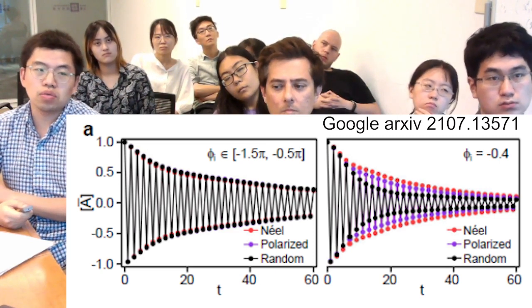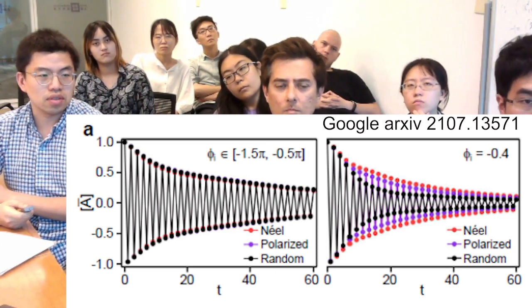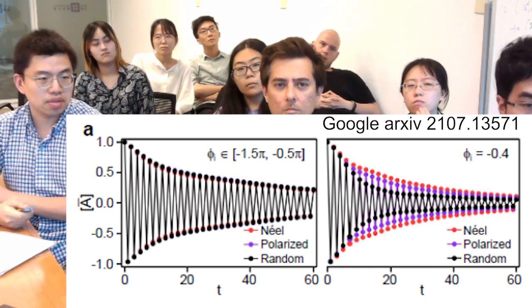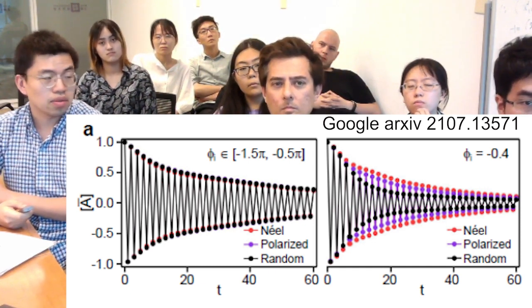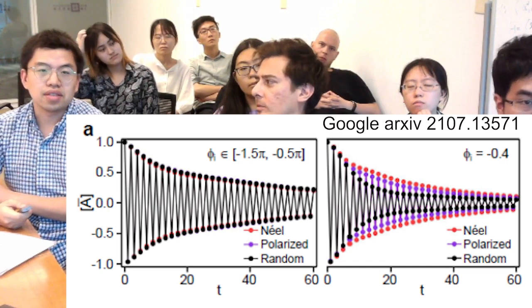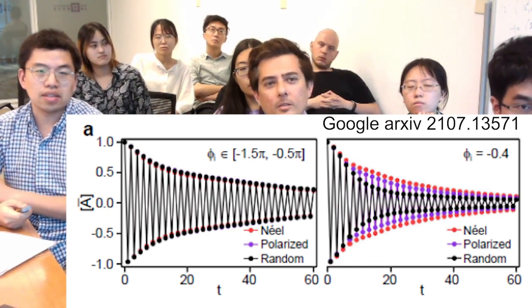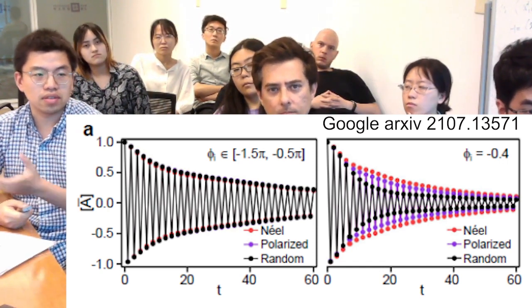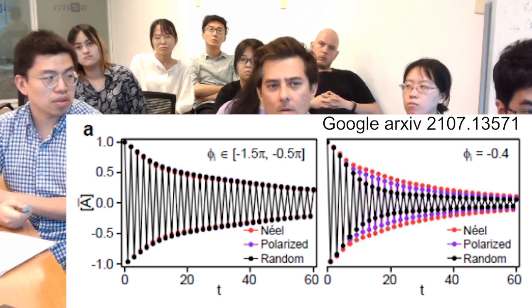These two are the most important characteristics of the time crystal. It's kind of robust against various situations. Exactly. It should be robust against disorder variation.